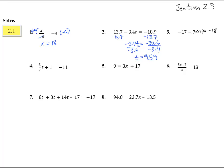Number 3. Negative 17 minus 7m equals negative 18. We've got to get rid of this guy. But it's not that minus sign. It's this minus sign that makes us have to go with a positive 17. So we get negative 7m equals negative 1. Divide by a negative 7, and we get m equals 1 seventh.